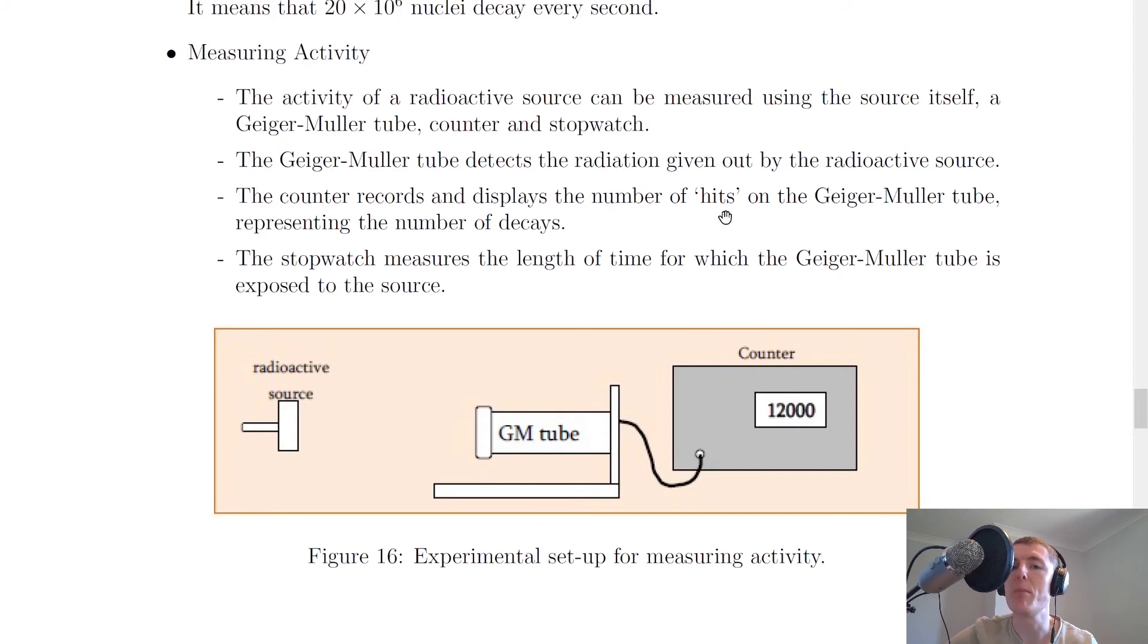This represents the number of decays. Every time there is a decay—an alpha particle, beta particle, or gamma ray emitted from the radioactive source—it passes through the thin mica window of the Geiger-Muller tube and is detected as one count on the counter. The stopwatch measures the length of time for which the Geiger-Muller tube is exposed to the source.